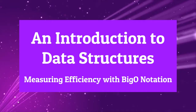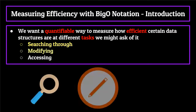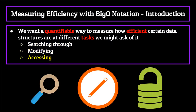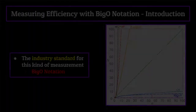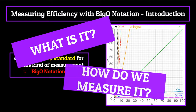Before we talk about all these data structures like maps and heaps, we want a quantifiable way to measure how efficient a certain data structure is at the different tasks we might ask of it. If we're going to be storing extremely large amounts of data, being able to search through, modify, or access the information within a data structure needs to be fast and efficient. The industry standard for this kind of implementation is big O notation. For most of the basic and intermediate data structures in this series, we're going to be spending some time talking about efficiency using big O notation — so this is definitely a topic you're not going to want to skip.